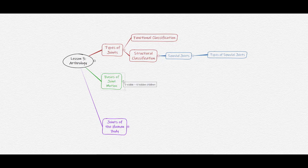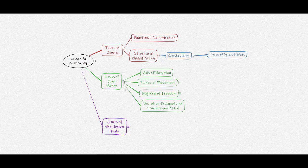Before discussing the different types of synovial joints, it will be helpful to examine some basics of joint motion — specifically the axis of rotation, planes of movement including typical movements in each plane, degrees of freedom of both a joint and a chain, and distal on proximal and proximal on distal movements.